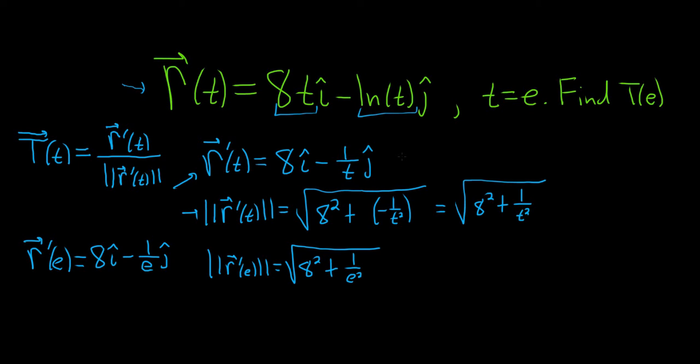So we basically have to divide these, and we could probably try to simplify. Let's go ahead and do that. So this is the square root of, I'm not sure why I left 8 squared as 8 squared. 8 squared is 64. So this is going to be 64 times e squared over e squared plus 1 over e squared. And when you do that, what that does is it lets you add the fractions. You can write it as 64 e squared plus 1 over e squared.